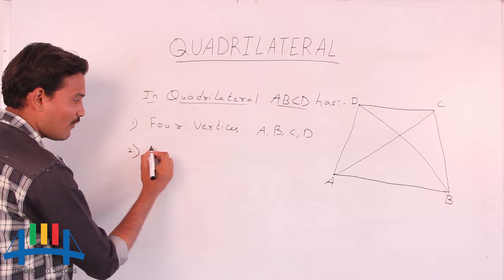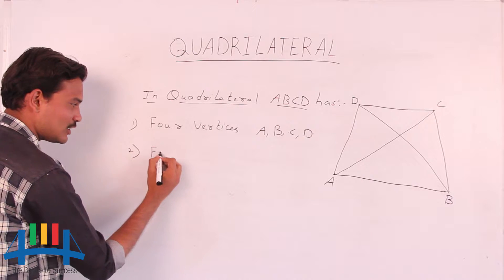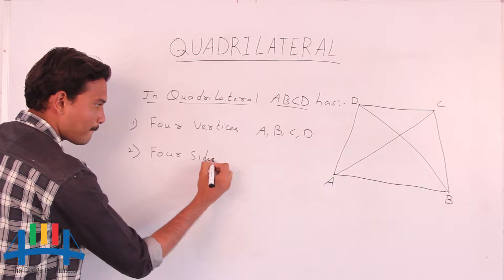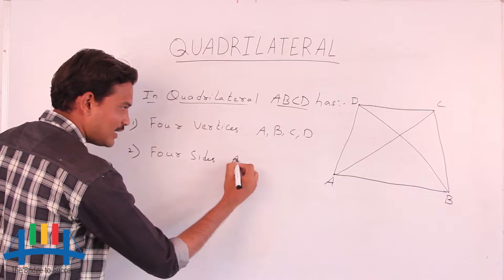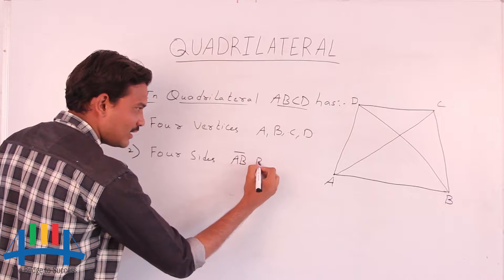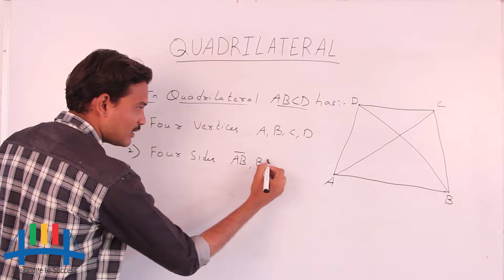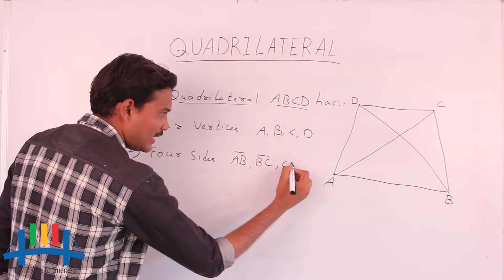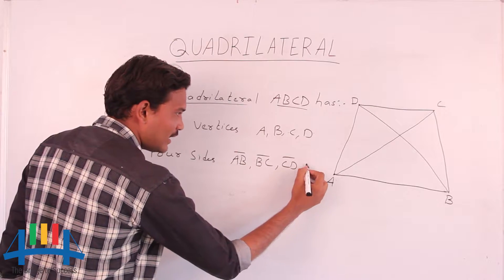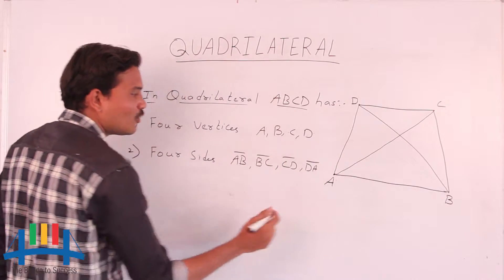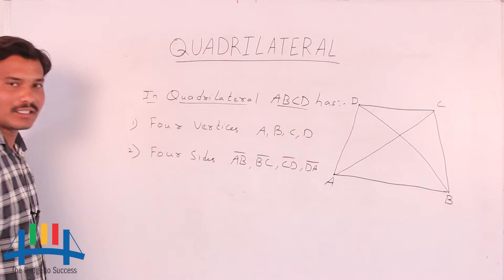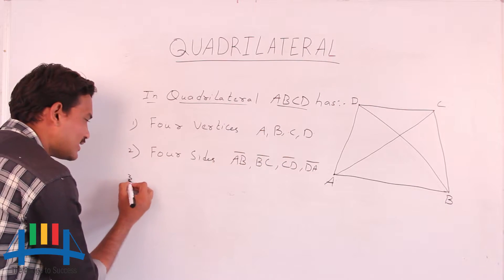In a quadrilateral we have four sides. The four sides are: AB is one side, BC is one more side, CD is one more side, and DA is one more side. So in total a quadrilateral has four line segments.